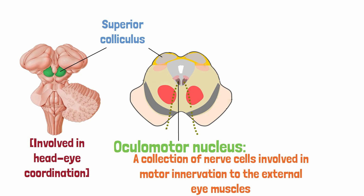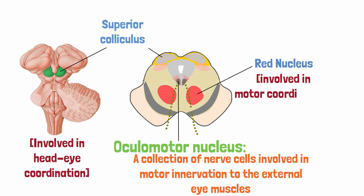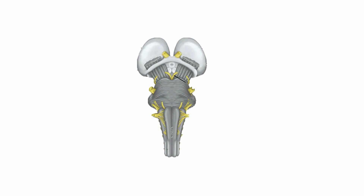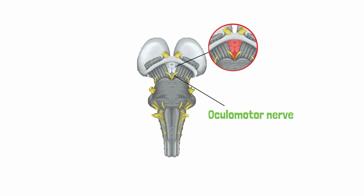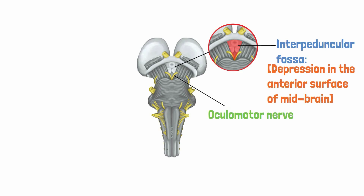The outgoing nerve initiates its path anteriorly, passing through the red nucleus. The red nucleus is a pair of pale pink rounded oval bodies located in the midbrain and is involved in motor coordination. Moving on, the nerve then passes further anteriorly and emerges on the anterior surface of the midbrain at the oculomotor sulcus. The oculomotor sulcus is a V-shaped depression in the lateral wall of the interpeduncular fossa, which is a depression in the anterior surface of the midbrain.